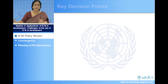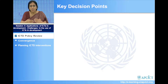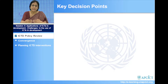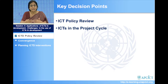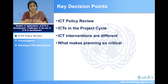We will start by looking at the fact that when we begin to take a decision to deploy information and communication technologies, what is happening and what is preventing or helping us to take something forward. The first part looks at what is ICT policy, what is ICT in terms of a project cycle, why are ICT interventions different, and what makes planning so critical.